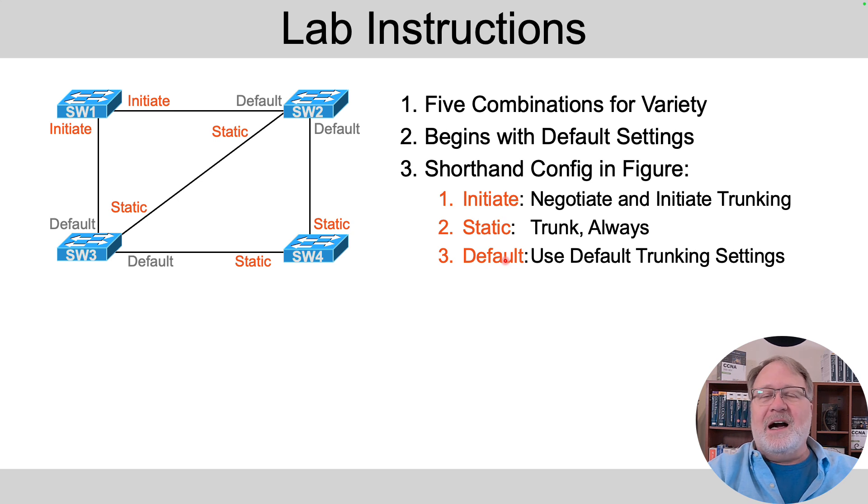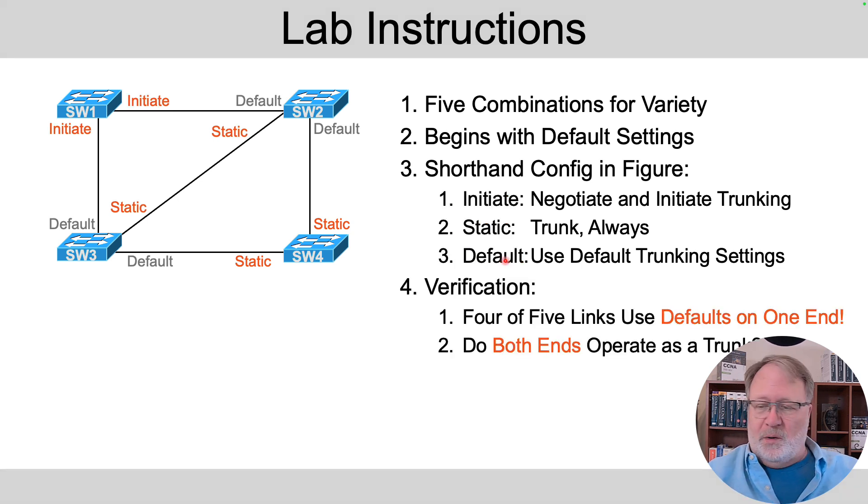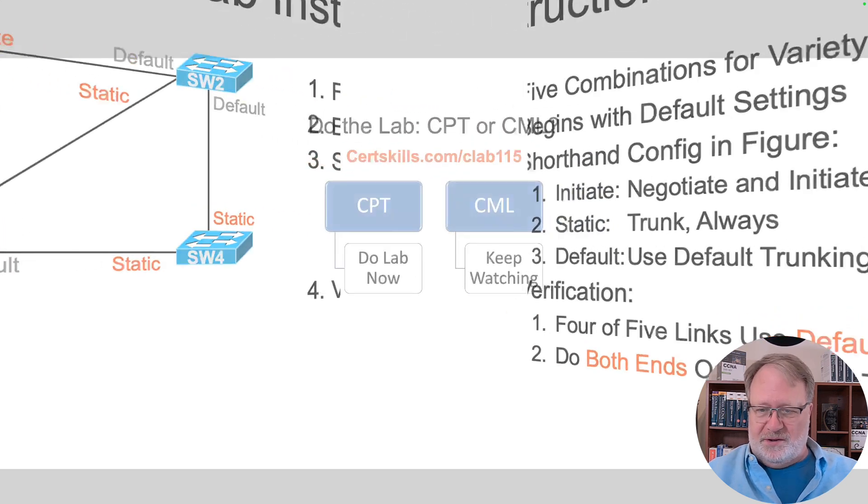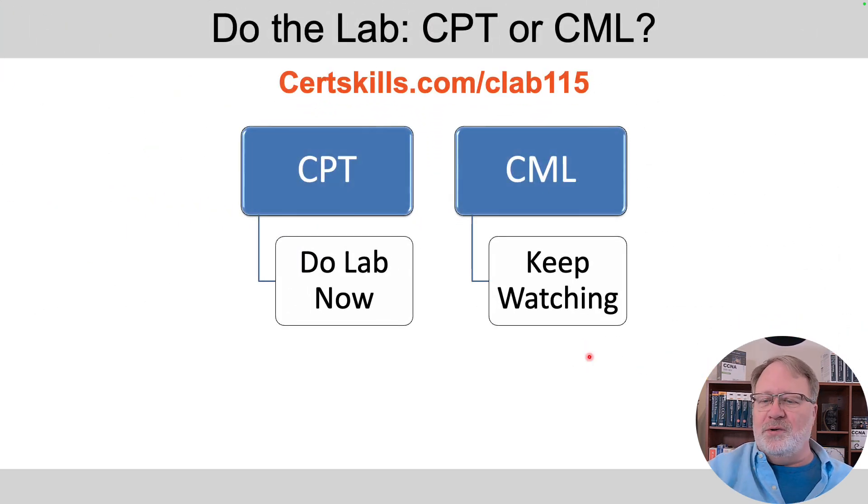Now, with all these combinations, it makes for some interesting logic in verifying what's going on. So for the verification steps, four to five links use defaults on one end of the link. So it requires you to think about, should this link end up trunking? Do both ends operate as a trunk? It's a good thing if both ends operate as a trunk, but are they? So you'll get to think through that for this lab. It's very useful in that regard. So go ahead and do the lab if you're planning on using Cisco Packet Tracer.